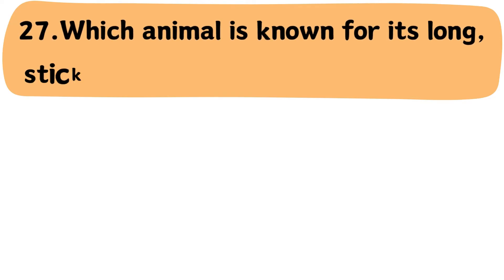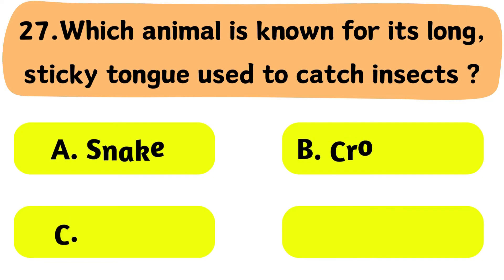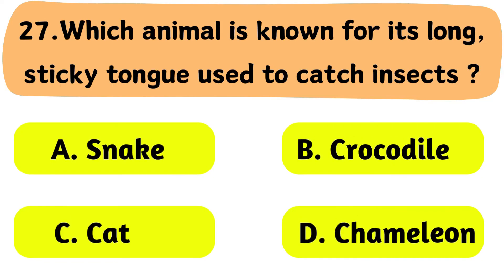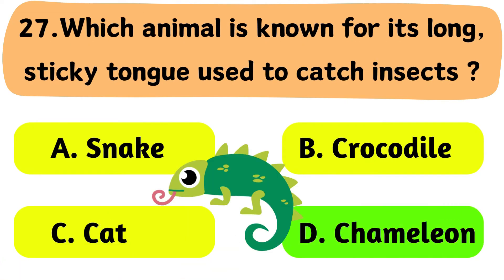Question No. 27: Which animal is known for its long, sticky tongue used to catch insects? A. Snake. B. Crocodile. C. Cat. D. Chameleon. The correct answer is Option D: Chameleon.